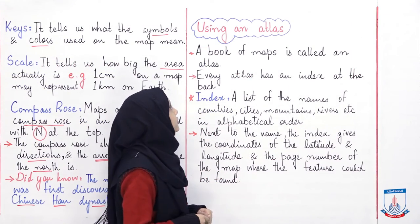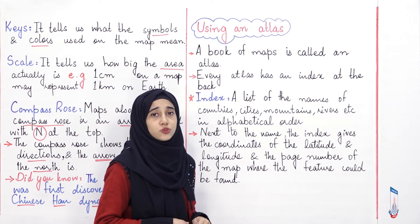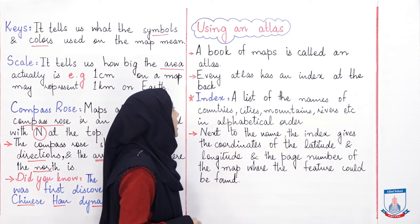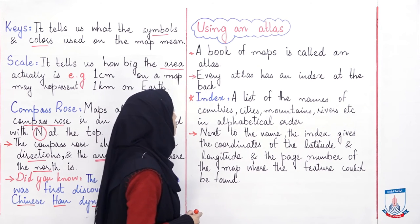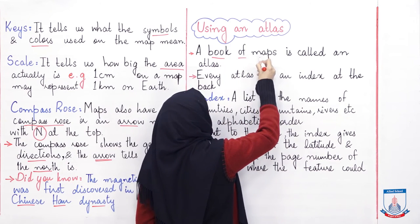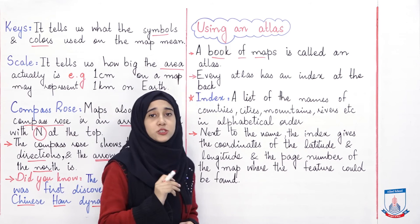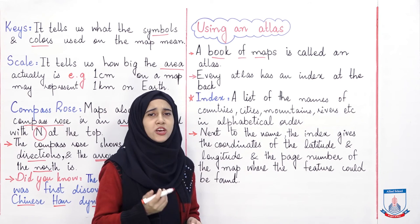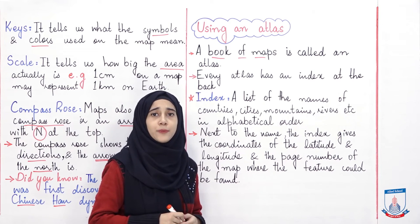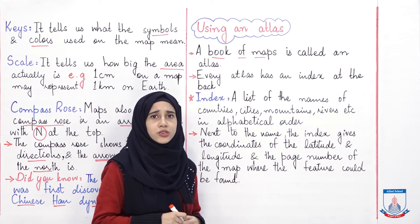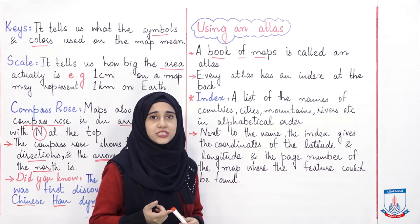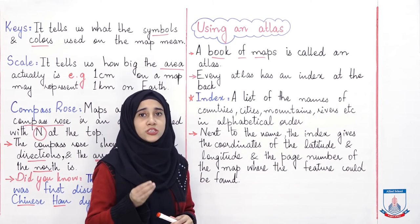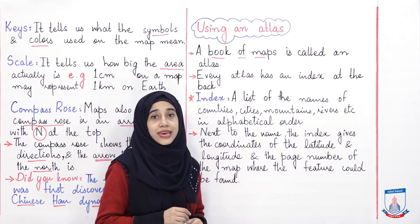Hemara next topic hai using an atlas. Atlas ko kaise use kertethe ho, par pahle baat kar lietethe hai ke atlas hota kya hai. A book of maps is called an atlas. It is a book of maps — yani ke ek aisi book jis mein different maps bane hue hote hai, different countries ke maps, ya maps jis mein shown hota hai kahaan pe kitna area land hai, kitna area water hai, ya kis mulk mein kahaan-kahaan kitni factories hai. To agar ek book hai jis mein different maps hai, toh woh book kehlati hai atlas.